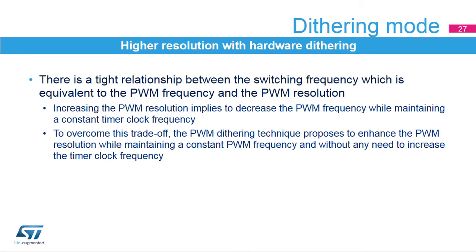For a timer with 16-bit resolution, increasing resolution requires decreasing frequency. For a given PWM clock frequency, if 14 bits of the timer are used, the PWM period is 2^14 clock cycles and the resolution is the PWM period divided by 2^14.